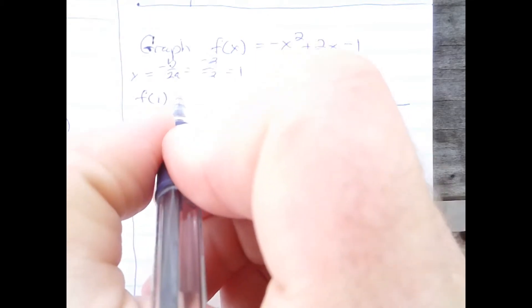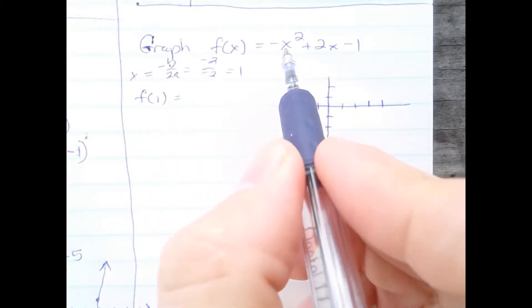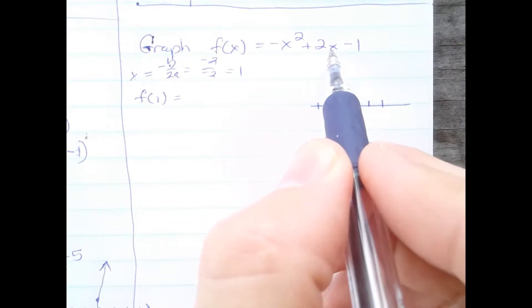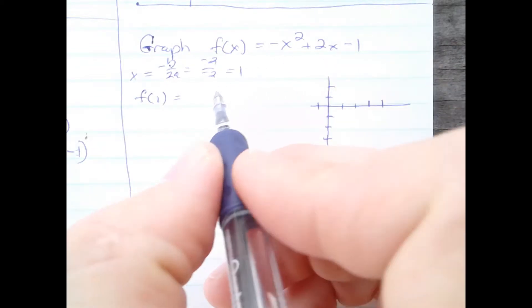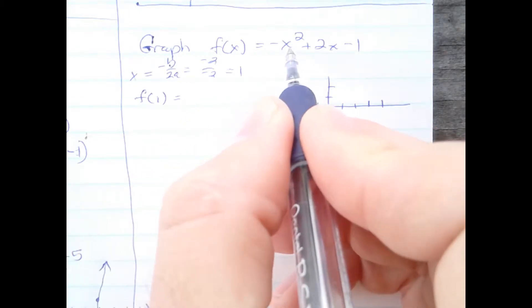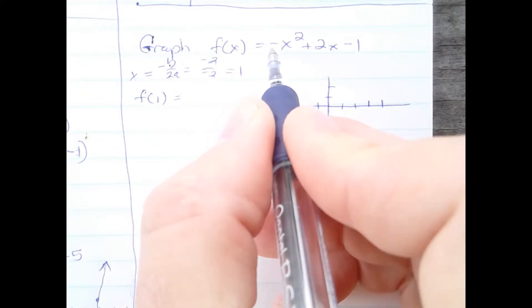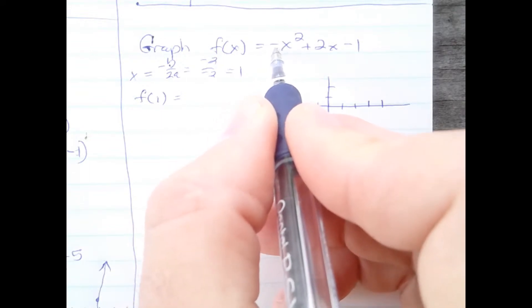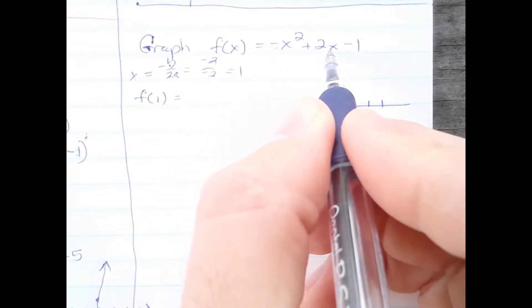Let's plug in 1 to the function. Scratch that — let's go back and do the order of operations correctly. If I put 1 in here and square it, I get 1. The negative is not being squared. So negative 1 plus 2 is 1, and 1 minus 1 is 0. So there's our y coordinate of our vertex.